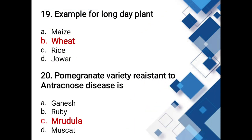Example for long day plants: options are maize, wheat, rice, jowar. The answer is wheat. Plants are classified as short day plants, long day plants, and day-neutral plants based on their response to light duration.